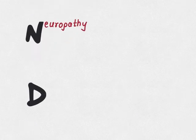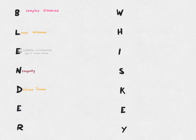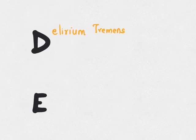D is for delirium tremens. It is the severe form of alcohol withdrawal where there is agitation, confusion, hallucinations, fever, tachycardia, hypertension, and electrolyte deficiencies. It should be treated with fluids, electrolyte correction, and short-acting benzodiazepines like lorazepam.